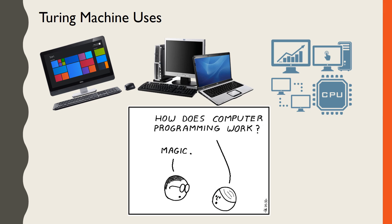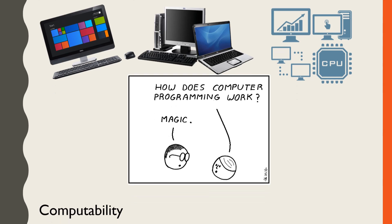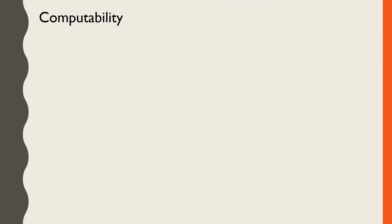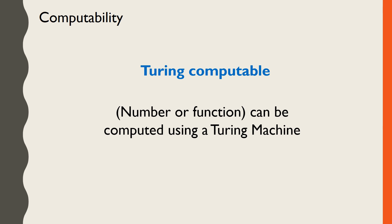With a mathematical machine designed, a simple but important definition arises regarding computability. A number, or function, is said to be Turing computable if there is a Turing machine that can compute it. That means that Turing machines can tell us a lot about computation in general, in addition to being easy to build and manipulate mathematically. We can learn about the limits of computation using Turing machines in this way.